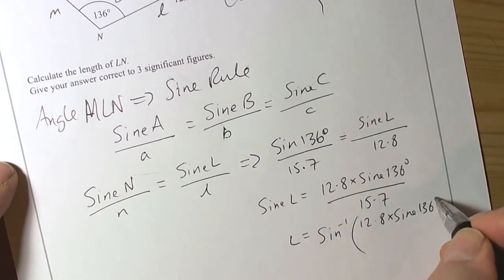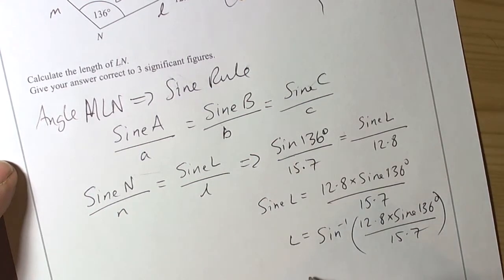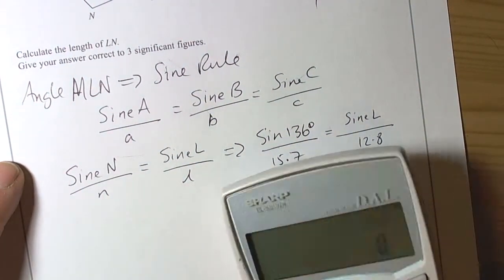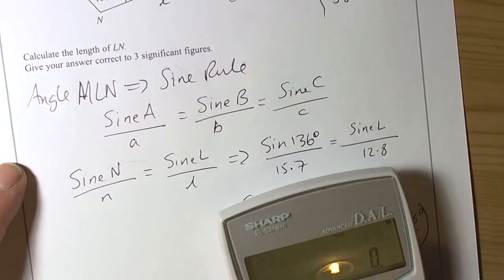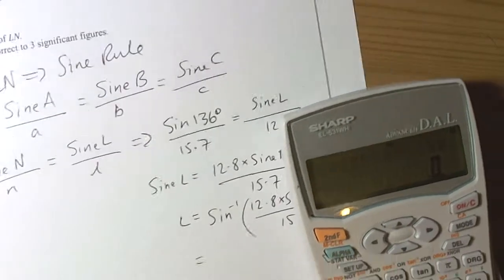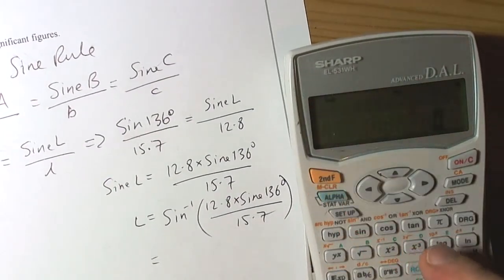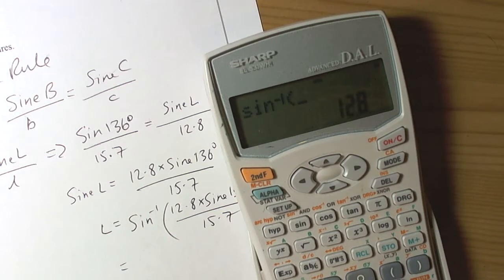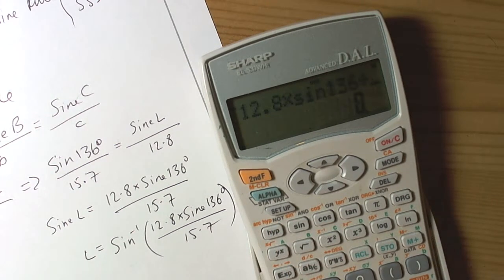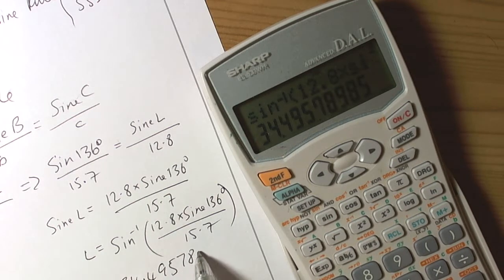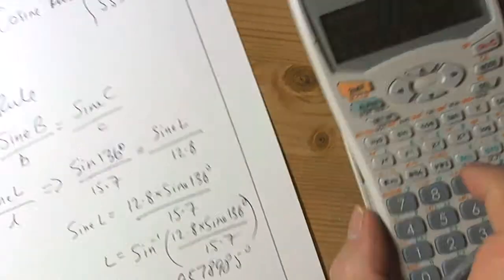On our calculators, we check it's in degrees mode — it was actually showing radians, so let's change modes. Right, it's now got degrees on the screen. We do the inverse sine — second function, sine — in a bracket, and we calculate 12.8 times sine of 136 divided by 15.7, close bracket, equals. That gives us an answer of 34.496 degrees, so that's what angle L is.